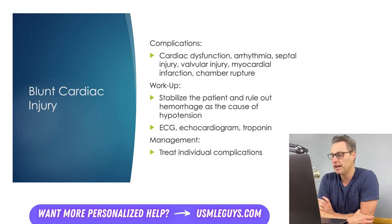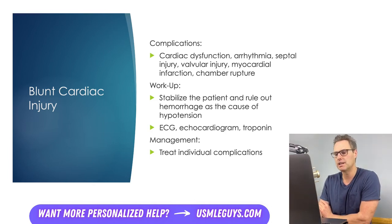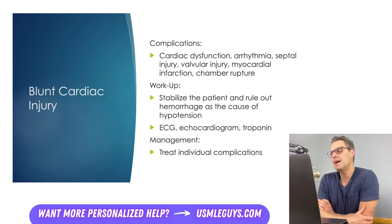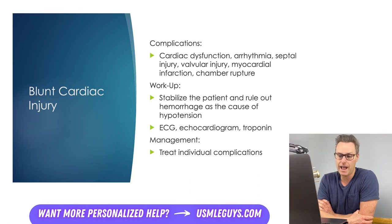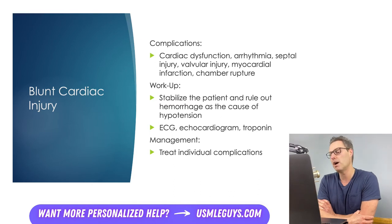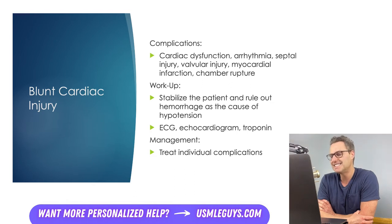Chamber rupture is very likely to result in death prior to arrival to the hospital, as the result of profound hypotension. As far as the workup goes, the first step in working up patients with a suspected blunt cardiac injury is to stabilize the patient and rule out hemorrhage as the cause of hypotension. This is the case far more frequently than myocardial contusion, so only after rigorous fluid resuscitation and ruling out sources of bleeding is the diagnosis of myocardial contusion worked up.